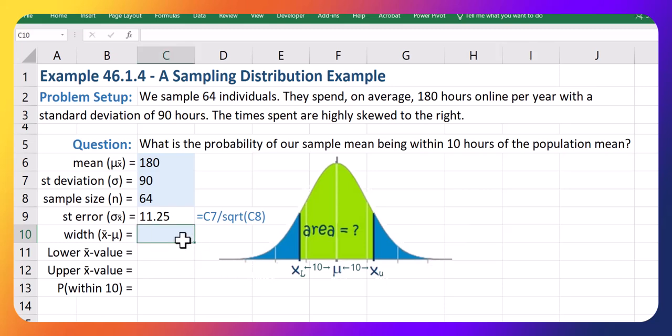Now, our width—we want to be 10 away from the sample mean, or the population mean. Our best guess for our population mean is the sample mean that we got, which is 180.